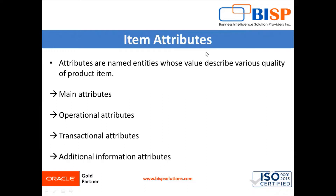Next are item attributes. Item attributes are named entities whose values describe various qualities of a product item. In Oracle Vision application, we have four types of attributes available: main attributes, operational attributes, transactional attributes, and additional information attributes.